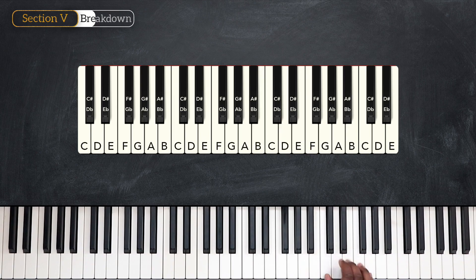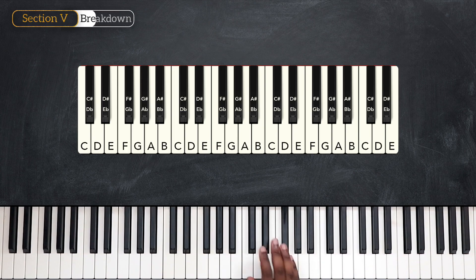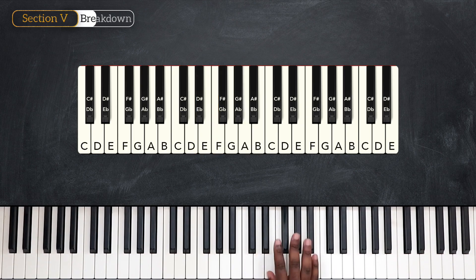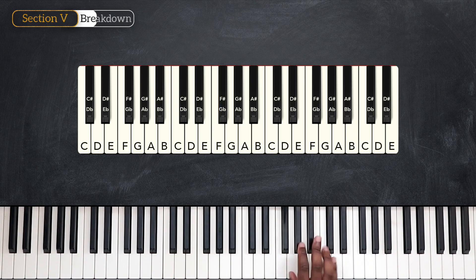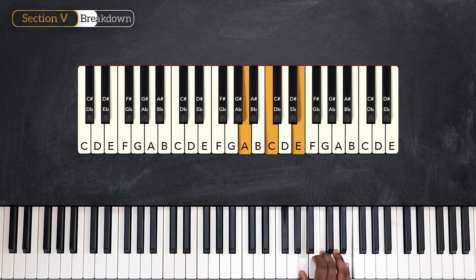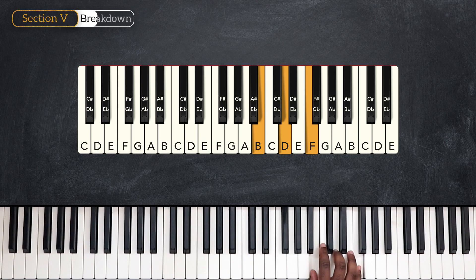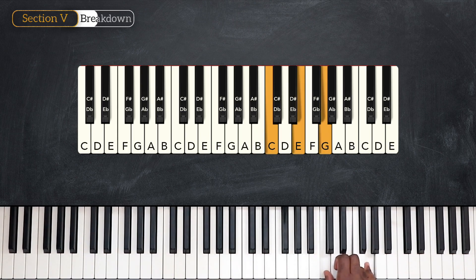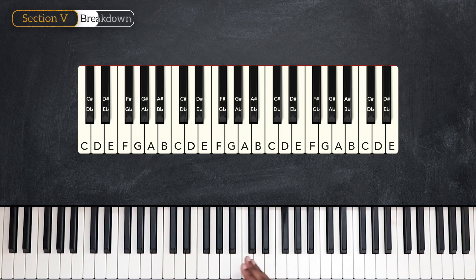And then next, we're back on C. So now we know that C is major, D is minor, E is minor, F is major, G is major, A is minor, and the last one, B, is a diminished chord. So now I've demonstrated the formula for the chords in the major scale: major, minor, minor, major, major, minor, and diminished.